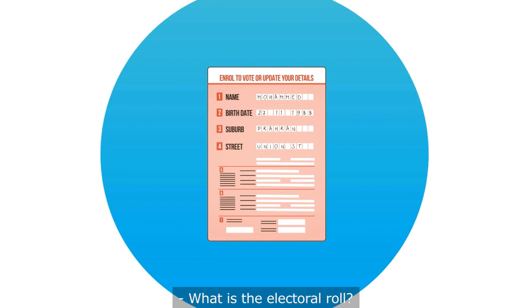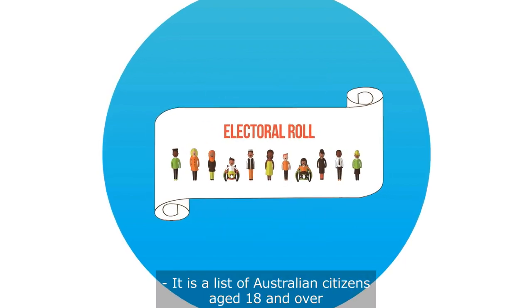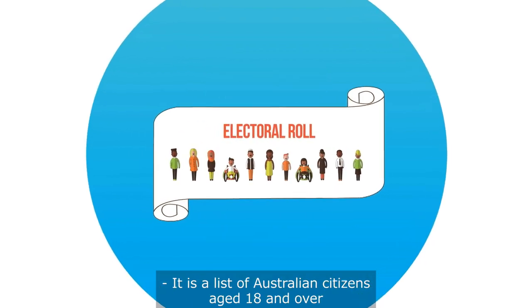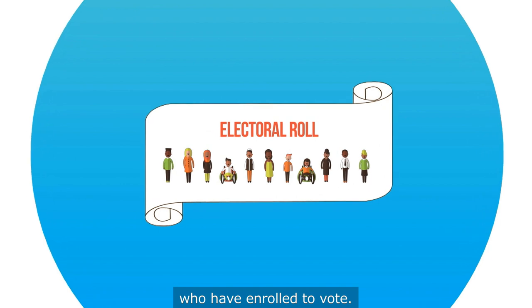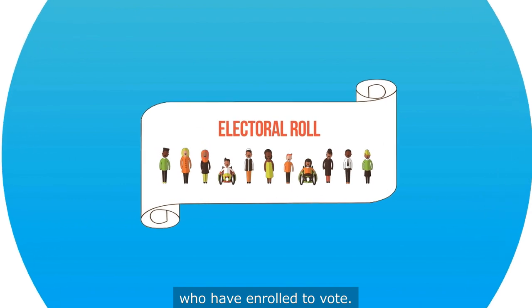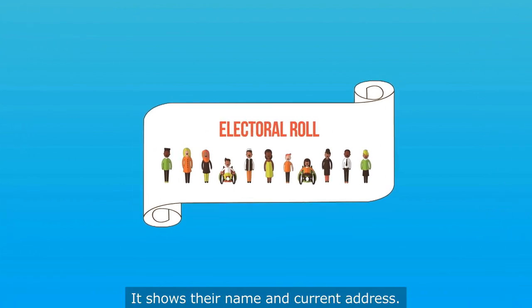What is the electoral roll? It is a list of Australian citizens aged 18 and over who have enrolled to vote. It shows their name and current address.